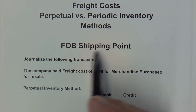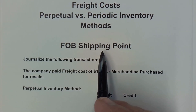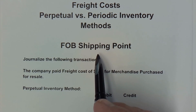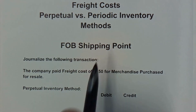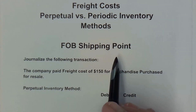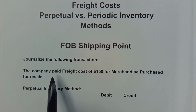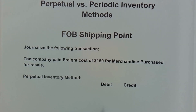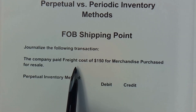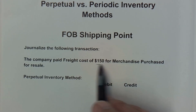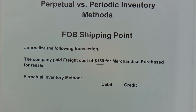FOB stands for Free On Board. Shipping point means that legal ownership of the merchandise changes at the time it is shipped from the seller to the buyer, and the buyer is responsible for the freight costs. The company we're accounting for here is the buyer — they are buying the merchandise for reselling to somebody else — and they incur freight costs of $150, which they're going to pay in cash.